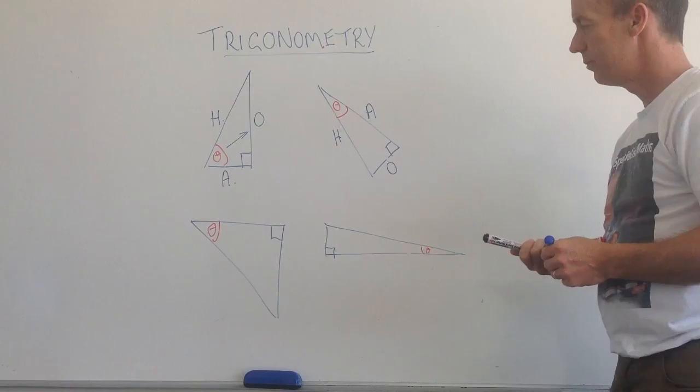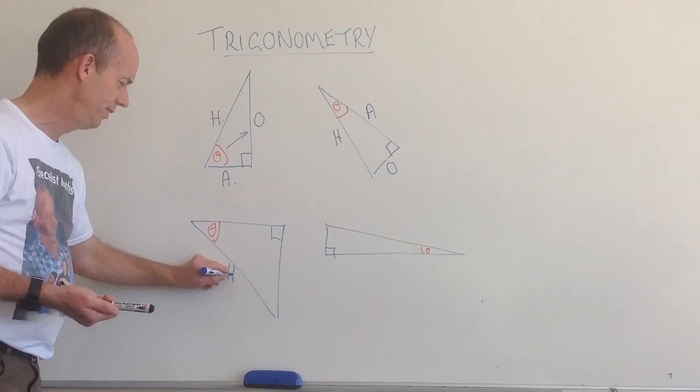And lastly, this side is opposite that angle. Opposite, adjacent, hypotenuse.